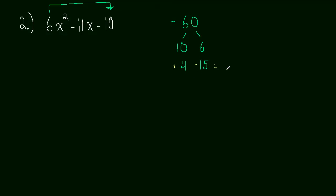If we add those two together, we get negative 11, and if we multiply them, we get negative 60. So those are our two factors. Those are our special numbers: positive 4 and negative 15.